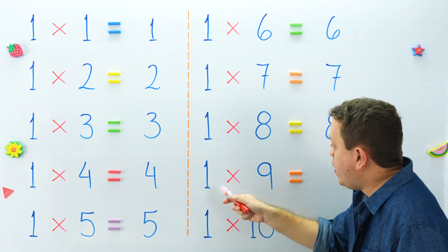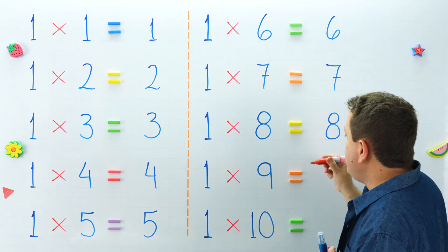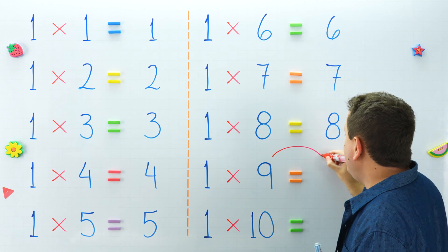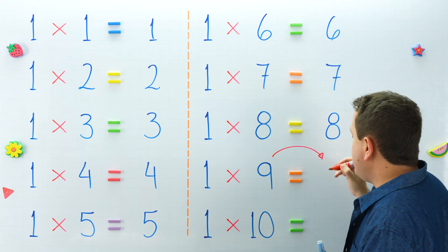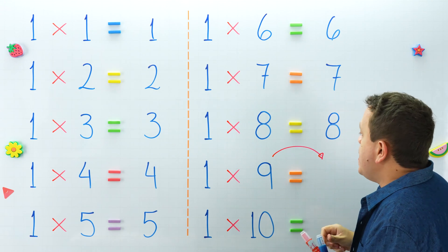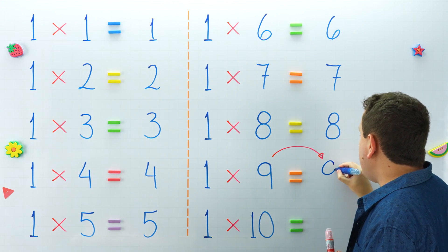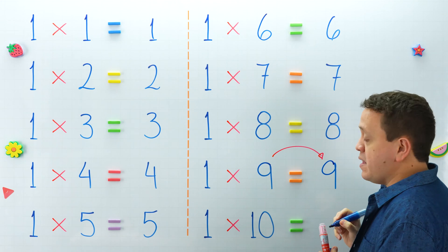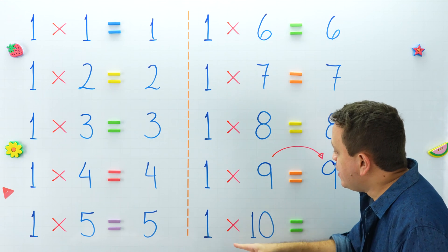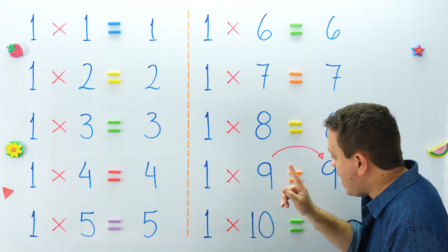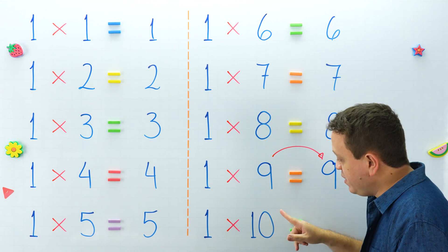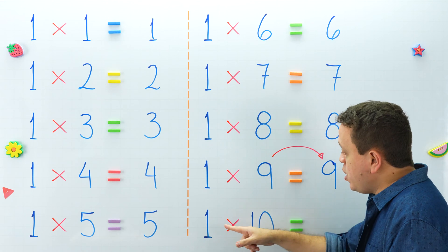For example, 1 times 9 equals 9. Why? Because the product of 1 and any number is that number. Once again, the product of 1 and any number is that number.